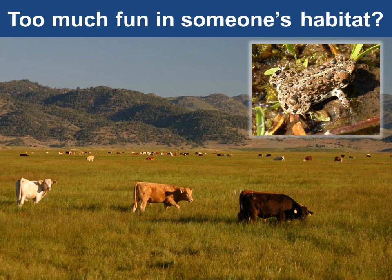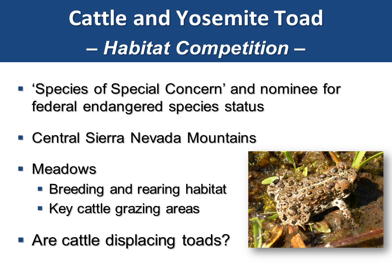One stocking rate is correct — if stocking rate's not correct, you can't do anything. Now, too much fun in somebody's habitat. We've talked about water quality and riparian areas. Dr. Leslie Roach has done significant work looking at a species of concern in California: the Yosemite toad, which lives in mountain meadows — areas also used for a lot of summer grazing. About 70,000 cattle in California spend the summer in U.S. Forest Service mountain meadows. The Yosemite toad is a nominee for the federal endangered species list, lives in the central Sierra Nevada, and uses meadows above 6,000 feet for breeding and rearing habitat. The question posed was: are cattle displacing Yosemite toad from their breeding habitat by having too much impact in those meadows?